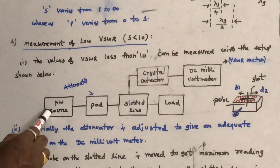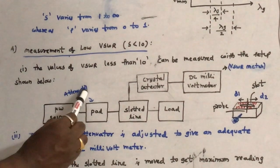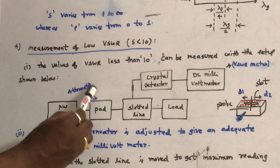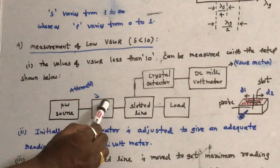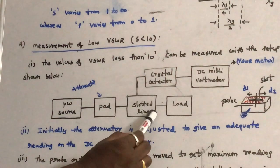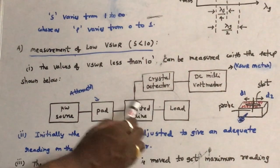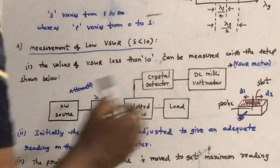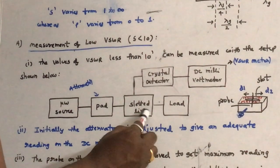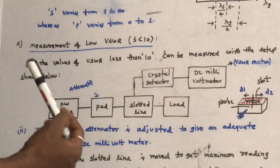In this setup, there is the microwave source and a pad which works as a variable attenuator. By adjusting this attenuator, we can reduce the power of the input wave to the required level. The slotted line is a very important component of the microwave bench; without this component we cannot measure any readings.